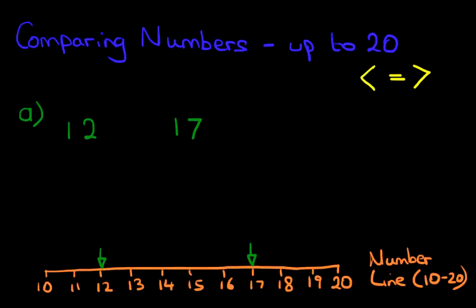So which arrow do we use? We use this one here. 12 is less than 17. Now how do we know that's correct? Well, if we look at which way it's pointing, it's pointing at the smaller number. 12 is the smaller number. That's how we work it out.